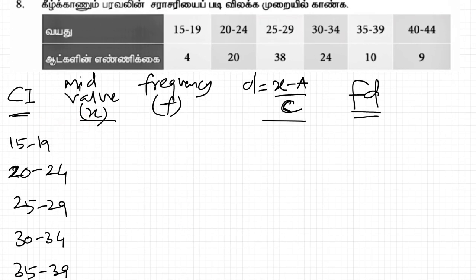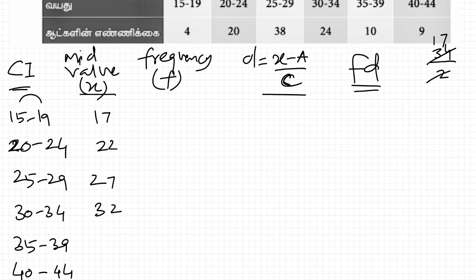Now mid value. Add the endpoints and divide by 2 to get the mid value. 15 plus 19 is 34, divided by 2 gives us 17. 20 plus 24 is 44, divided by 2 is 22. Similarly, we get 27, then 32, then 37, and 42.